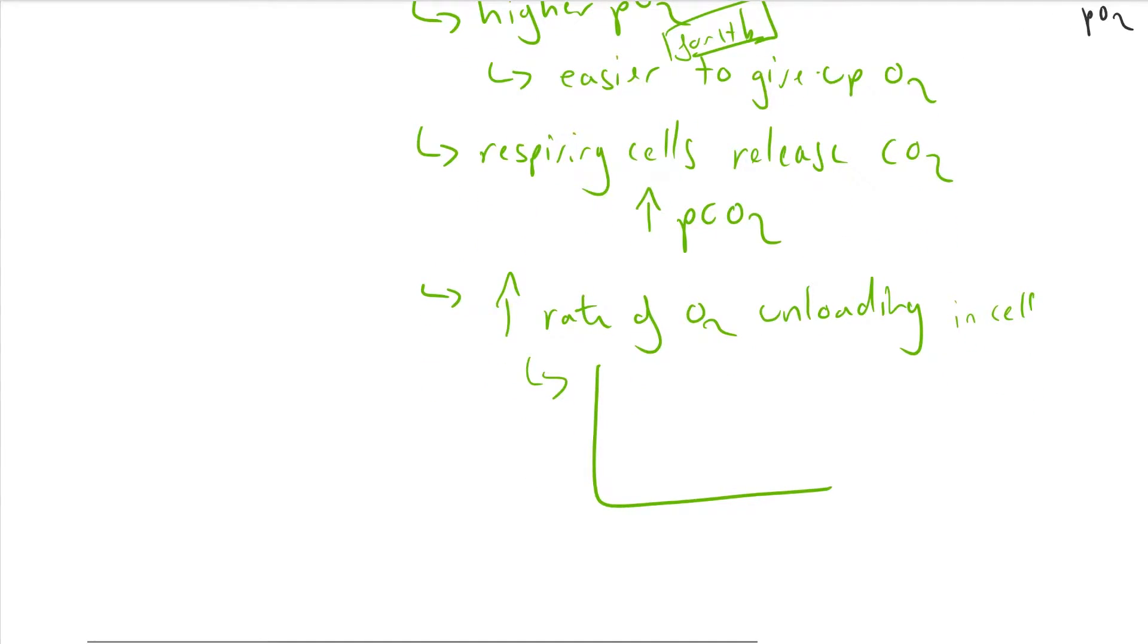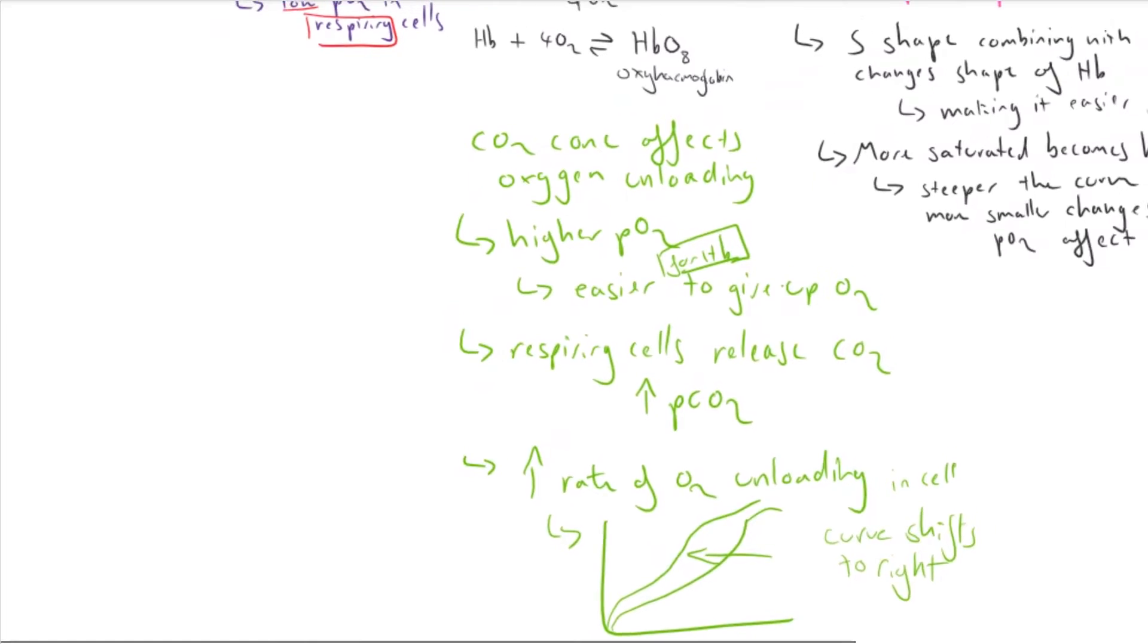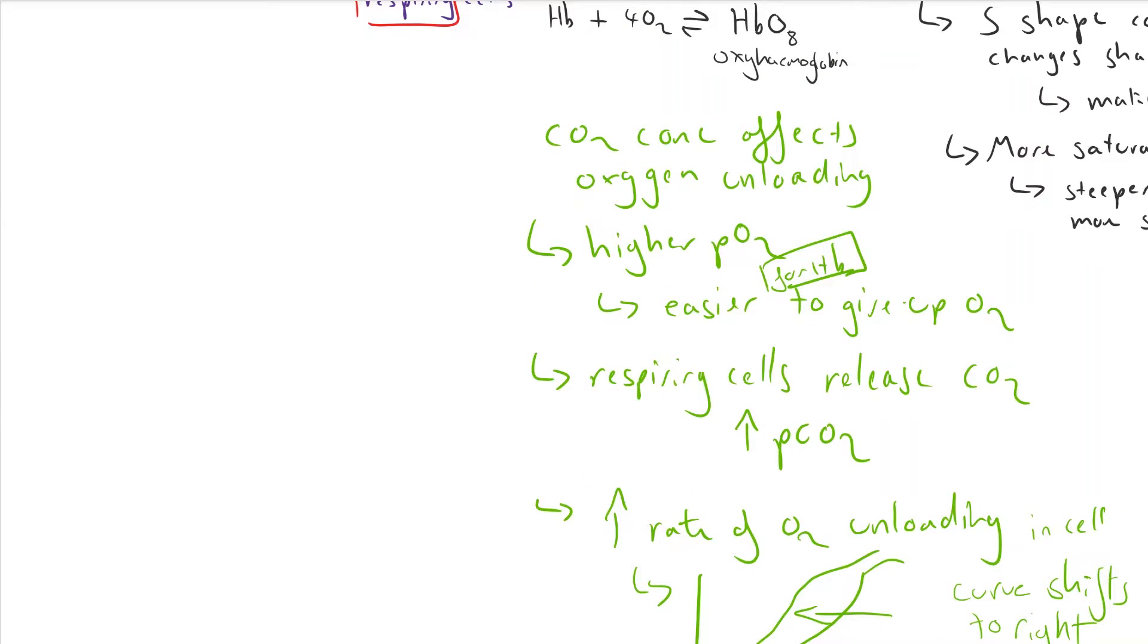And so the shifting to the right means at a higher partial pressure, more oxygen has already been released from the molecule, as you can see here. The curve on the left is the one it would normally be, and the curve on the right is the one with higher concentration of carbon dioxide. Which is useful in highly respiring cells. It means that the oxygen is released much more easily before all the oxygen has been used up in the cell and allows the cell to continue respiring and doing its function, such as a muscle.